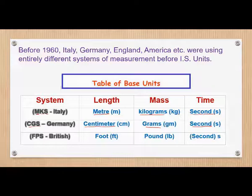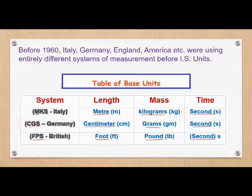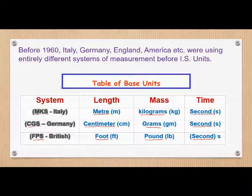In England, they were using the FPS system — F stands for foot, P for pound, and S for seconds. Here are the different symbols for each unit: meter is M, CM for centimeter, FT for foot. Kilogram has the symbol KG, GM for grams, LB for pound, and S for second. The one thing common in all three systems was time.